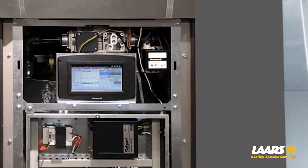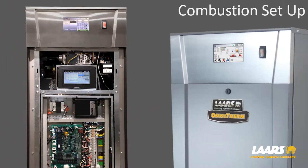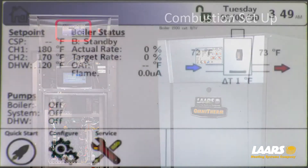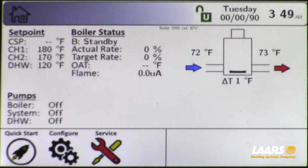To do combustion setup, the boiler must be powered for one hour prior to combustion setup. That does not mean the boiler needs to be running — it just needs to be powered up. There is a heater in the FAR mod that needs to be energized.